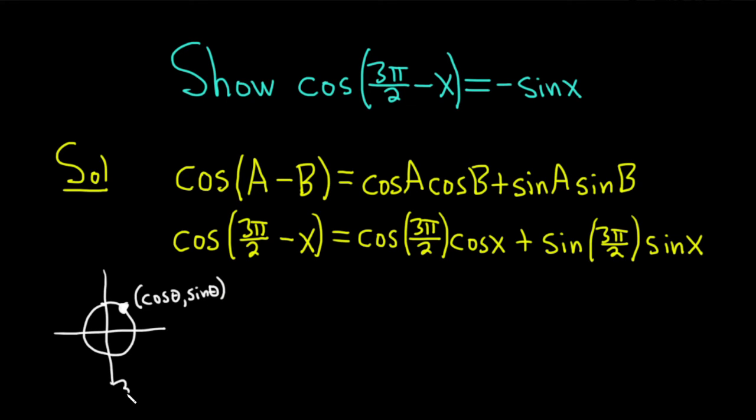So 3π/2 is down over here. So the ordered pair here, I'll indicate it in blue, is going to be 0, comma, negative 1.